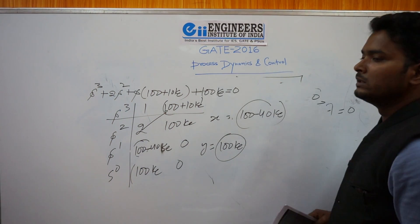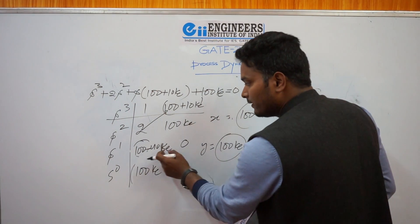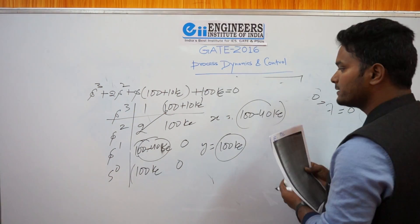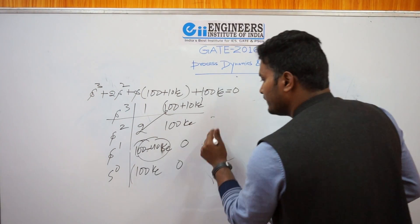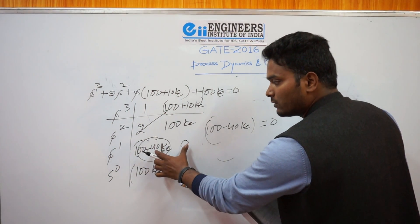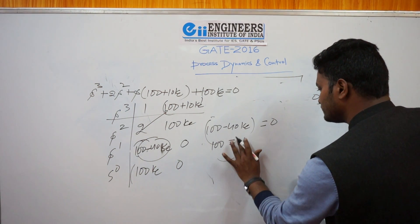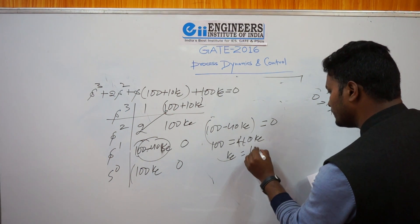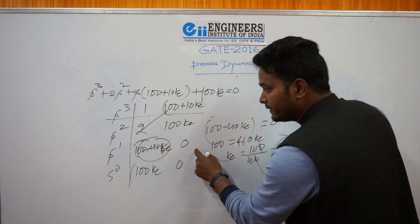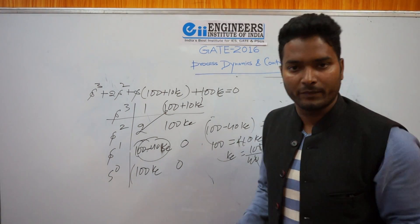For marginal stability, all elements of one row of the Routh array must become zero. The s⁰ row cannot be zero here, so we set the s¹ row element to zero: 100 minus 40·Kc equals 0. Solving: 100 equals 40·Kc, giving Kc equals 100/40 equals 2.5. When Kc equals 2.5, all elements of this row become zero, which corresponds to the system becoming marginally, or critically, stable. This is the value of Kc.